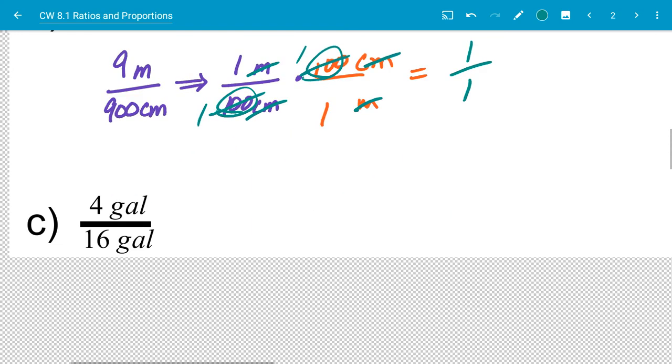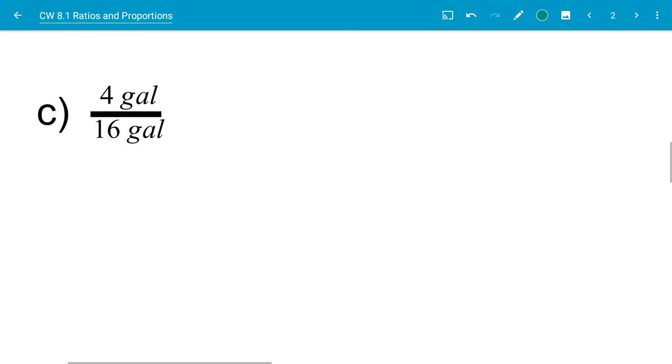Remember, simplified ratios have no units. So C is a little bit easier because I have the same units. I can just, gallon divided by a gallon is just one. And four over 16 can reduce to one over four. So my simplified ratio there is just one over four.